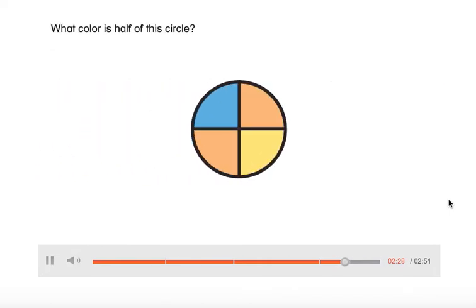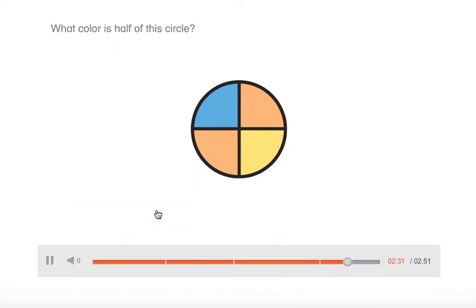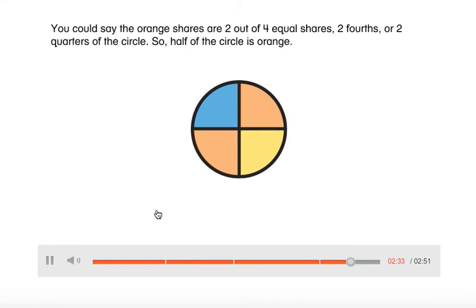What color is half of this circle? Select your answer. You could say the orange shares are two out of four equal shares, two-fourths, or two-quarters of the circle. So half of the circle is orange.